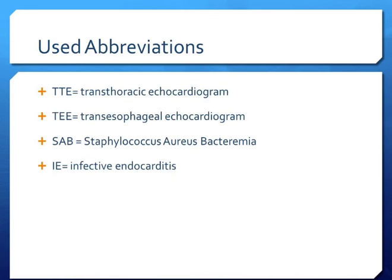You will see some abbreviations throughout this lecture. TTE stands for transthoracic echocardiogram. TEE stands for transesophageal echocardiogram. SAB stands for Staphylococcus aureus bacteremia, and IE stands for infective endocarditis.